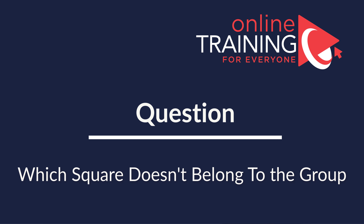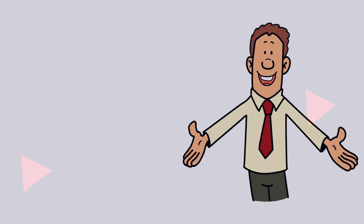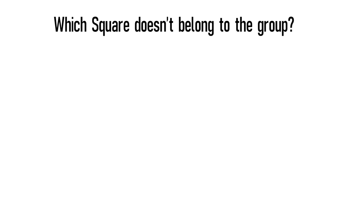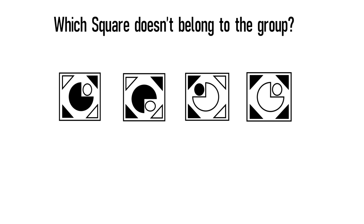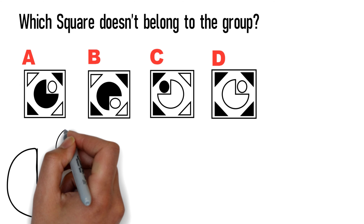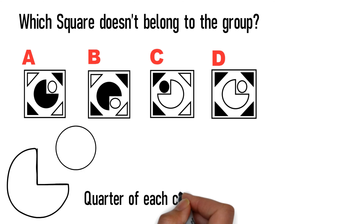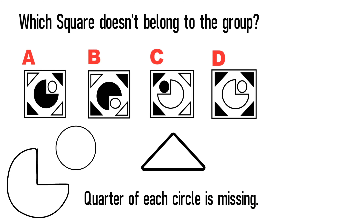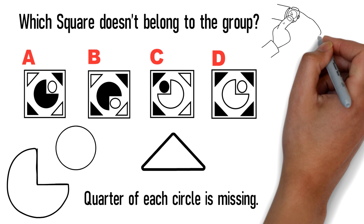Now let's look at how to solve another type of problem on the test: determining which object does not belong to the group. In this particular case, you need to determine which square doesn't belong. You're presented with four squares — choices A, B, C, and D. Each square contains two circles inside. In the large circle, a quarter is missing and replaced with a small circle. All squares also have triangles in the corners. Give yourself five to ten seconds to see if you can find the answer.